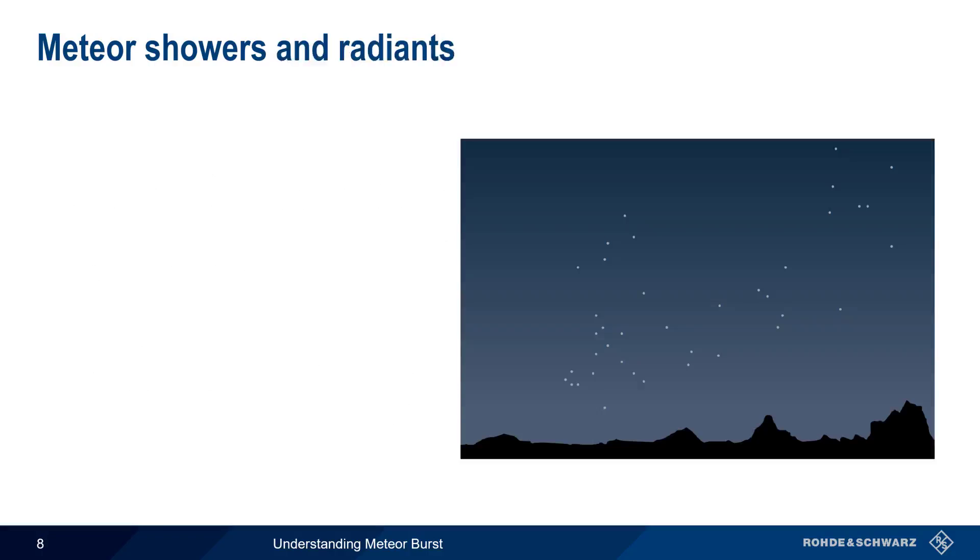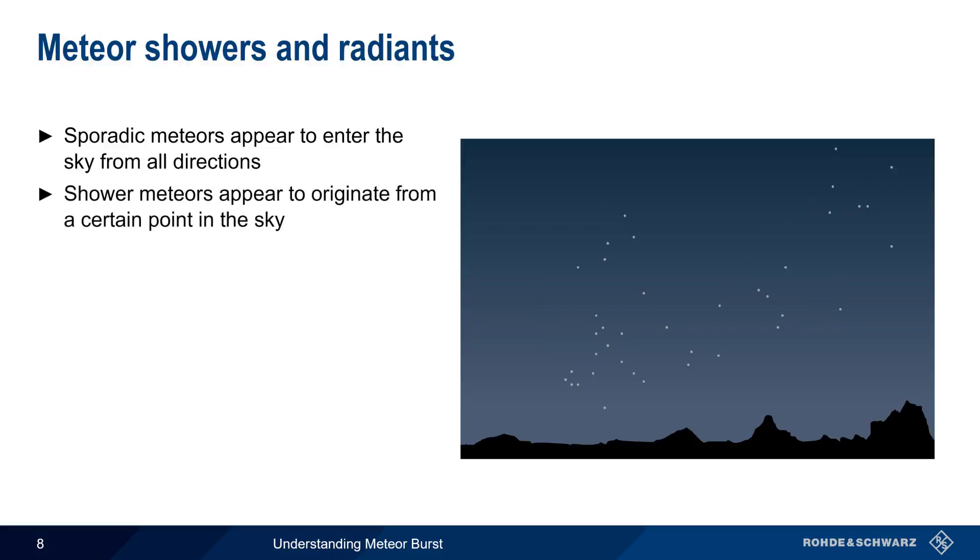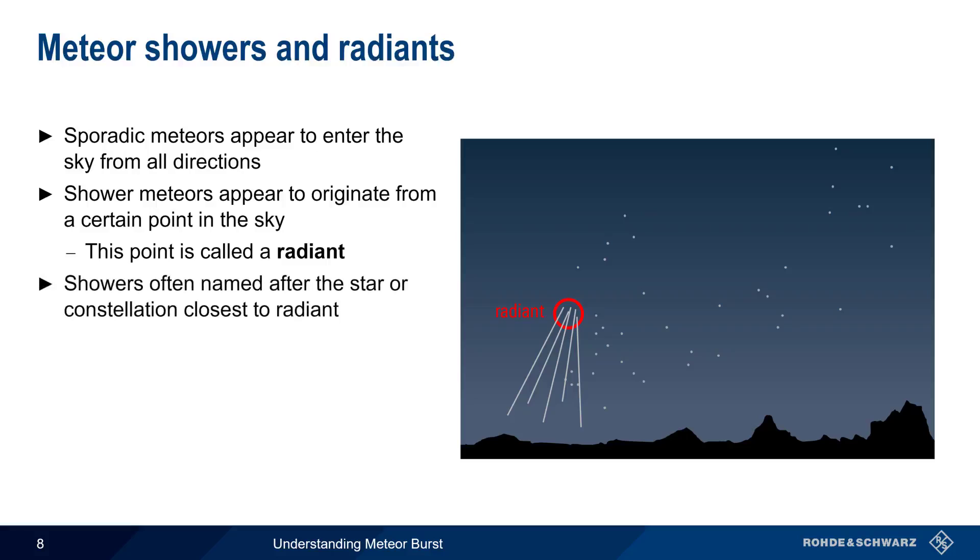An important difference between sporadic and shower meteors is that sporadic meteors appear to enter the sky from all directions. Shower meteors, on the other hand, appear to originate from a certain point or area in the sky. This point is referred to as the radiant. Meteor showers are often named after the star or a constellation closest to the radiant. For example, the Persids meteor shower is named after the fact that the radiant is near the Perseus constellation.